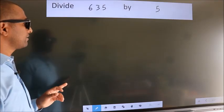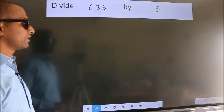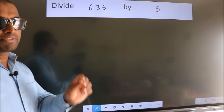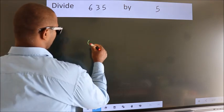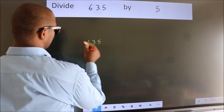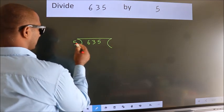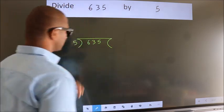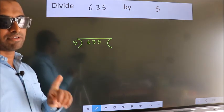Divide 635 by 5. To do this division, we should frame it in this way: 635 here, 5 here. This is your step 1.